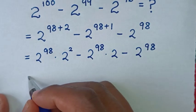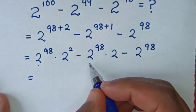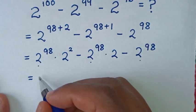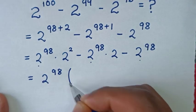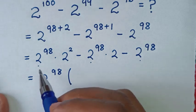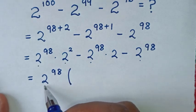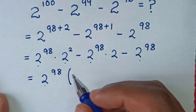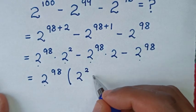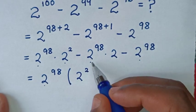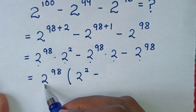In the next step, 2 power of 98 is in common, so we take 2 power of 98 out of the bracket. Then 2 power of 98 times 2 power of 2 divided by 2 power of 98 gives us 2 power of 2. Then minus 2 power of 98 times 2 divided by 2 power of 98 gives us 2.